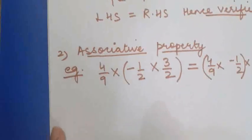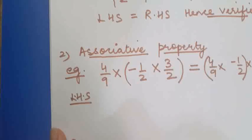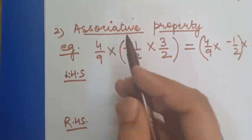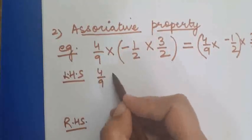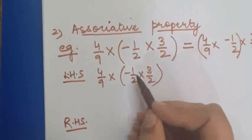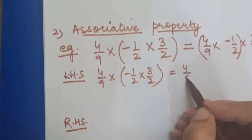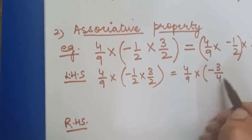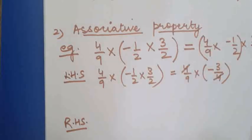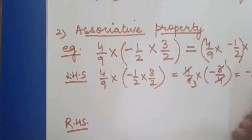We can verify this by taking LHS and RHS sides. For LHS: 4 upon 9 into minus 1 upon 2 into 3 upon 2. Solving the bracket first — nothing is cancelled — we get 4 upon 9 multiplied by minus 3 upon 4. Then 4 cancels with 4, giving minus 1 upon 3.